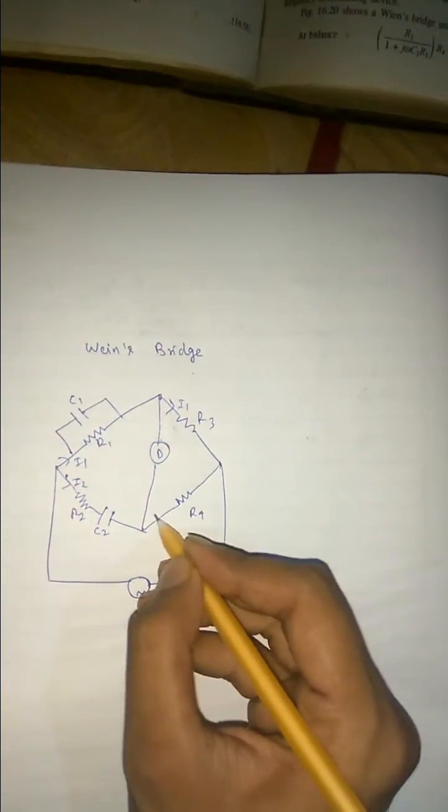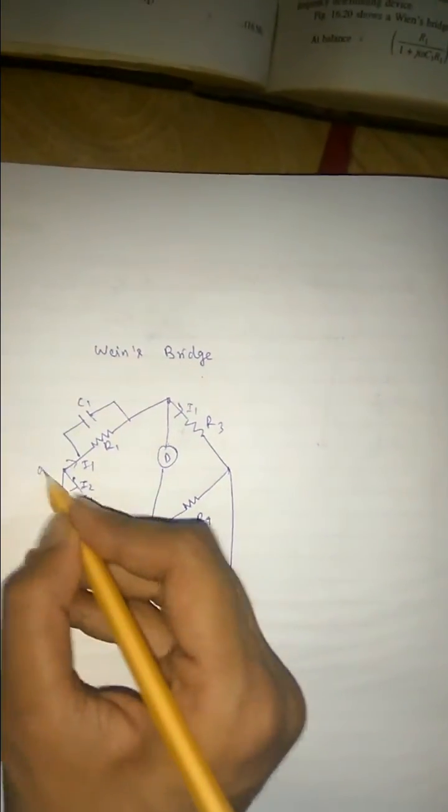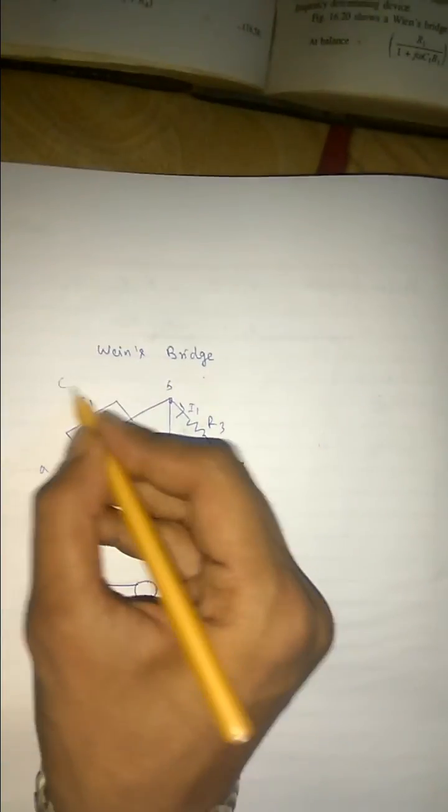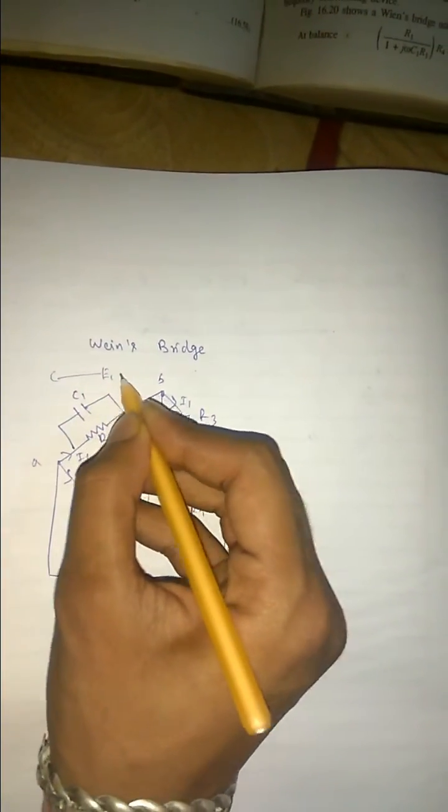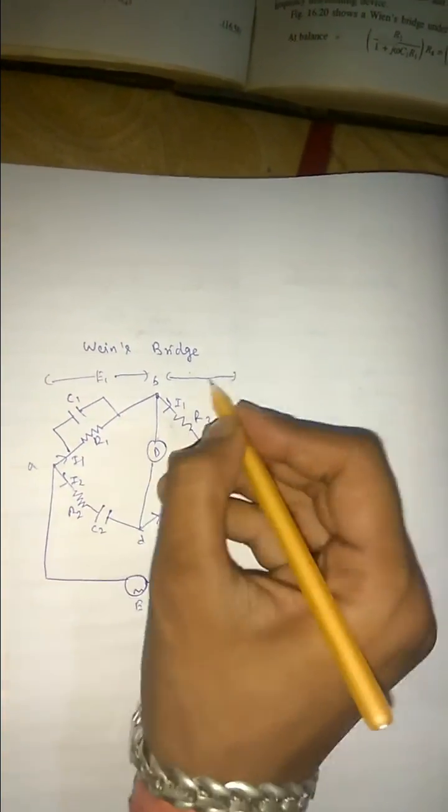So i1 from here, i2 from here. Name A, B, C, D. This is e1, e2.